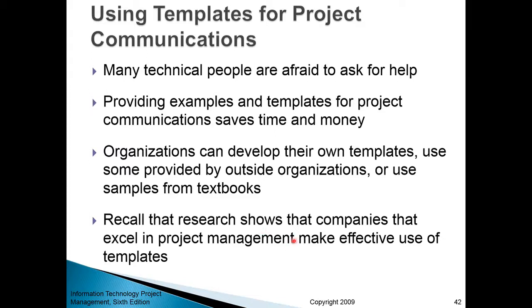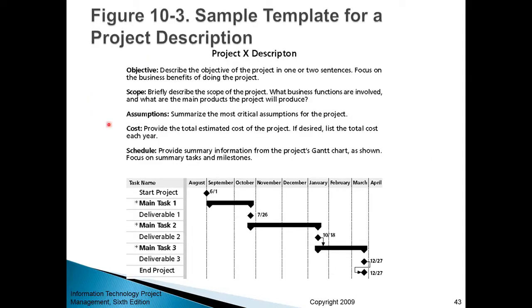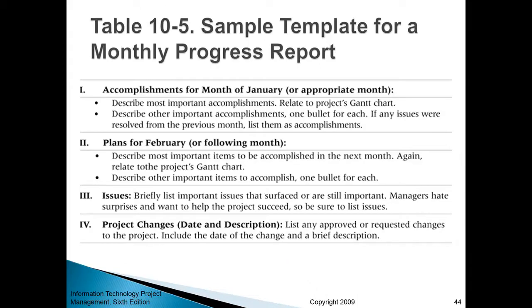Research shows that companies with excellent project management make effective use of templates. For example, if you want to pitch a project and have it discussed during a committee meeting, you might use a template that includes main objective, scope, assumptions, cost, and schedule in the form of a Gantt chart. Here we have a template for a monthly progress report — you can pause and look at some of the parts you may include.